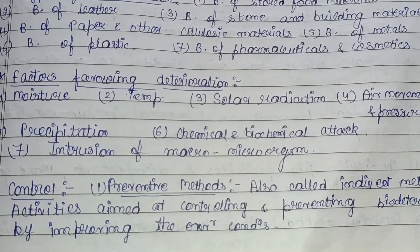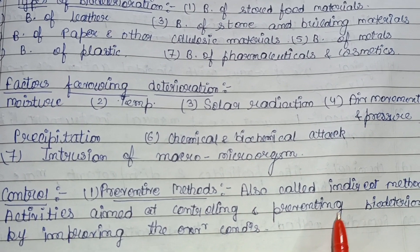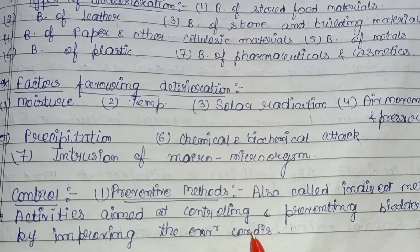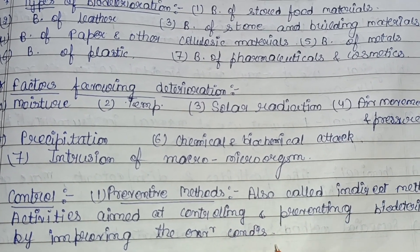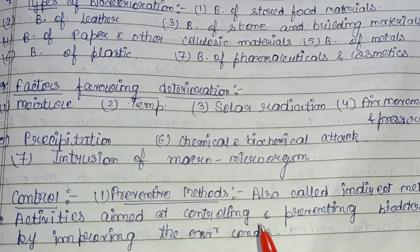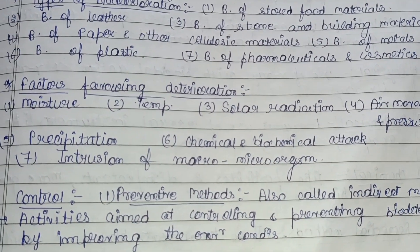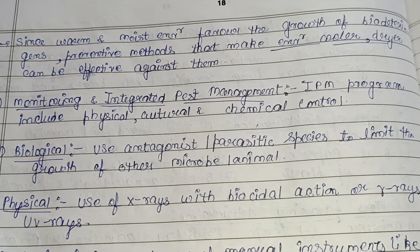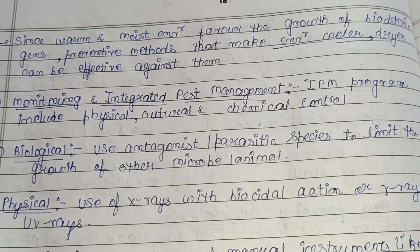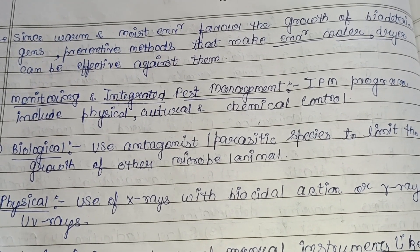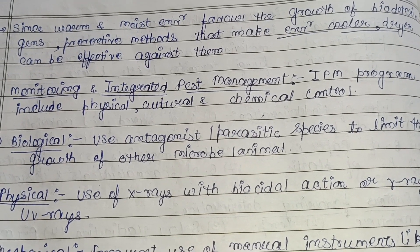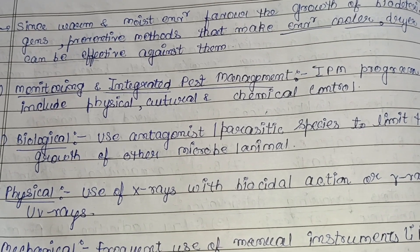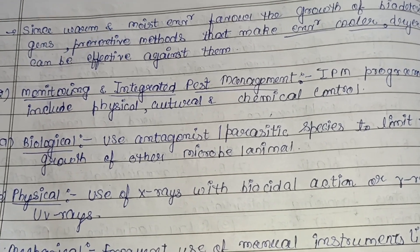In preventive methods, no direct control is required — only improving the environmental conditions around a particular source, for example around any monument, stone, or building material, so that bio deterioration activity can be prevented. Since warm and moist environments favor growth, preventive methods make the environment cooler and drier so there are no favorable conditions for them to grow or attack the source.